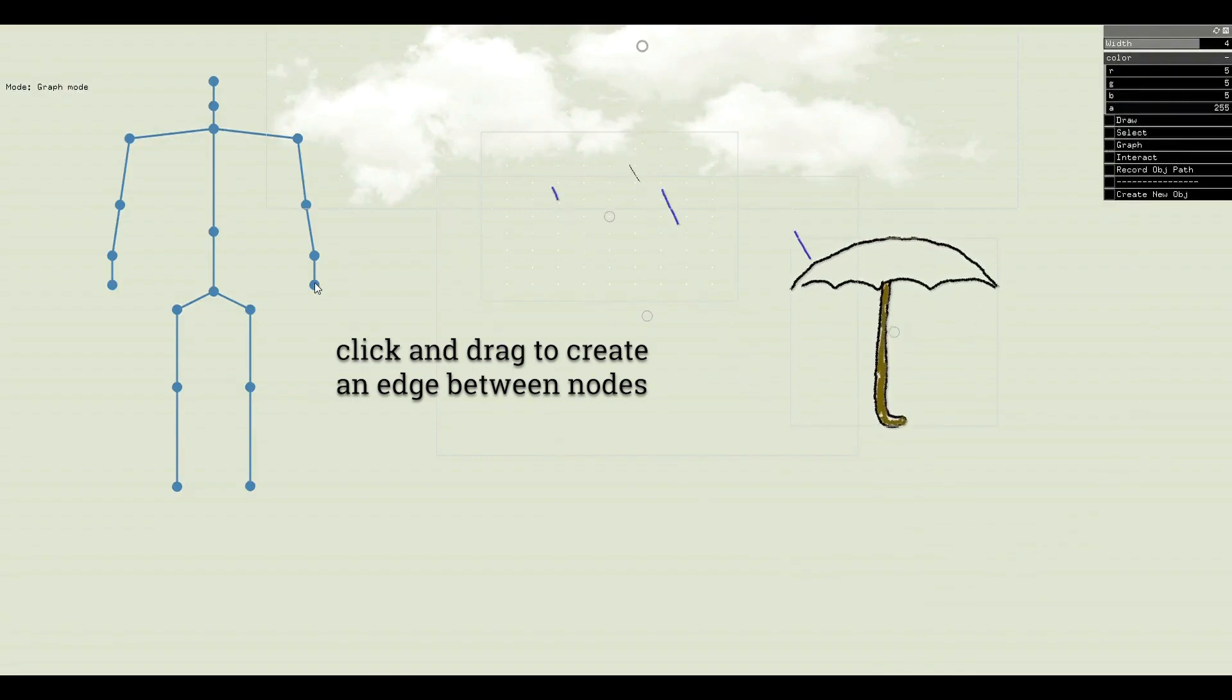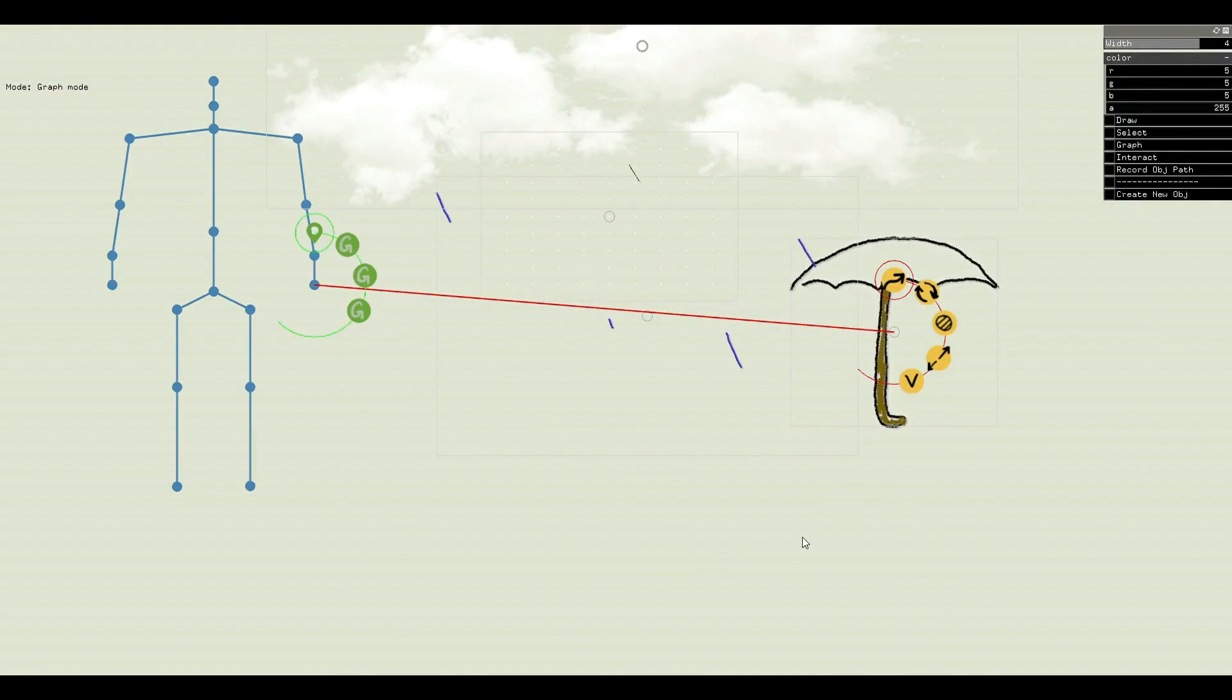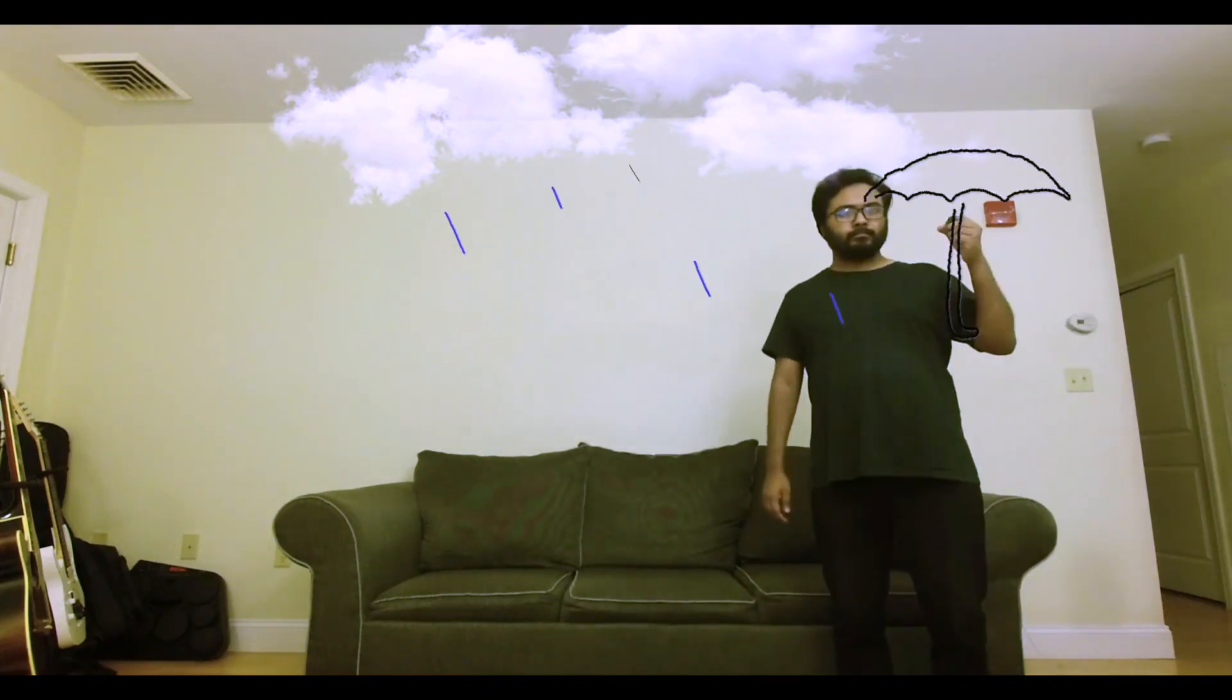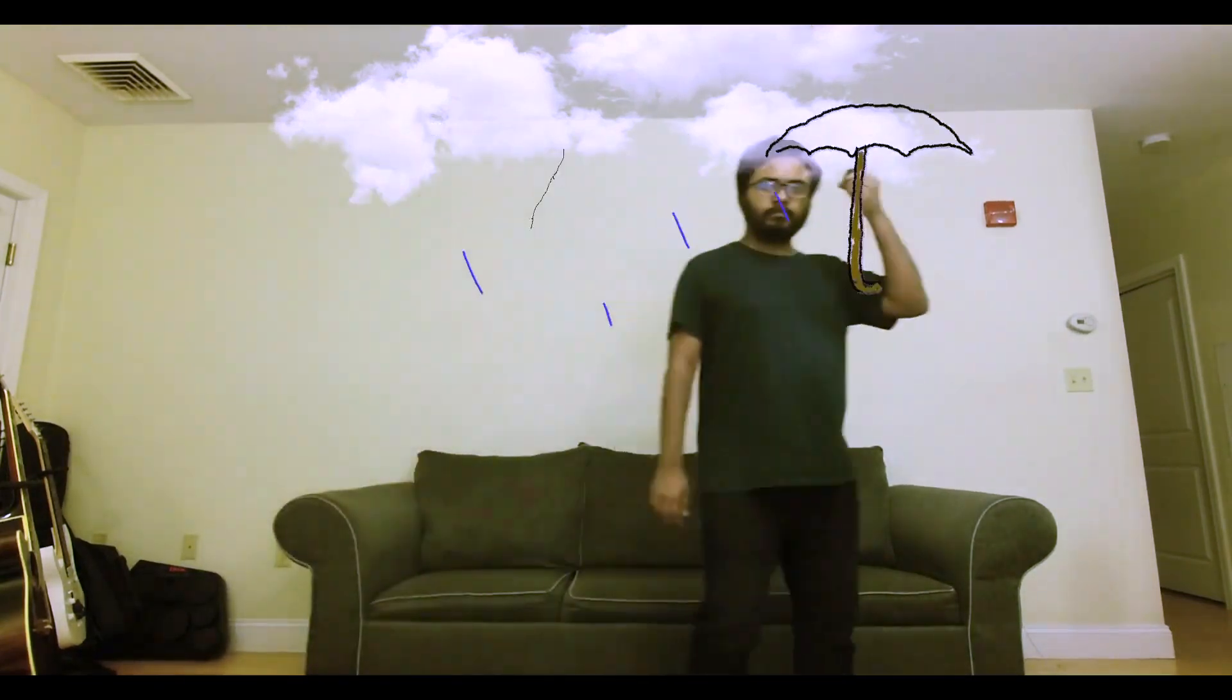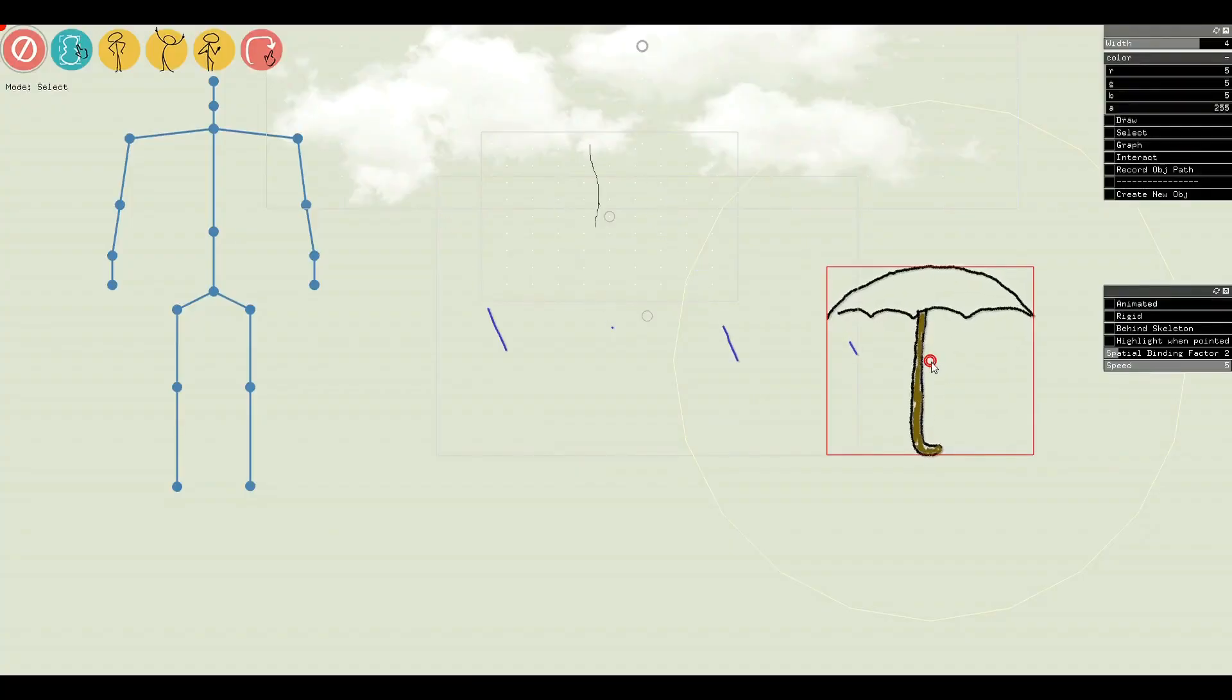Let's switch to the graph mode where we can define interaction relationships between the elements and also the presenter. An edge from a skeleton joint to an element can be used to anchor the element with that skeleton joint. Let's drag the anchor down so the umbrella is pivoted at the bottom instead of the center.